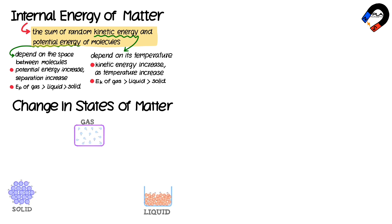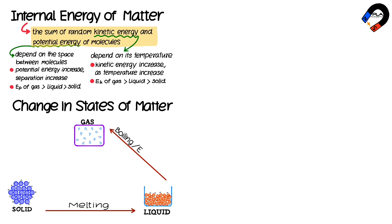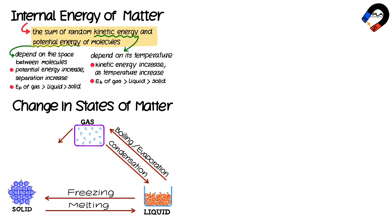Changes in states of matter: when a solid is changed into a liquid, this process is called melting. Liquid changed into gas is called boiling or evaporating. Gas changed into liquid is called condensation. Liquid changed into solid is called freezing. Gas changed into solid is called deposition. Solid changed into gas is called sublimation.